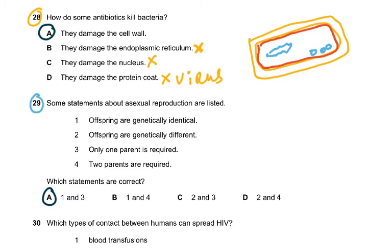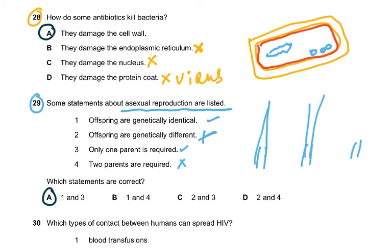Question 29: some statements about asexual reproduction. Offspring are genetically identical and only one parent is required — that is correct. Offspring being genetically different or requiring two parents is wrong. Asexual reproduction is like planting sugarcane: you chop it into pieces, put them in soil, water them, and they grow. That is the key difference between sexual and asexual reproduction.